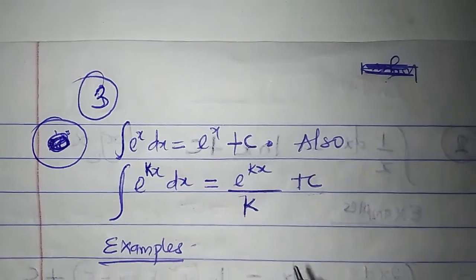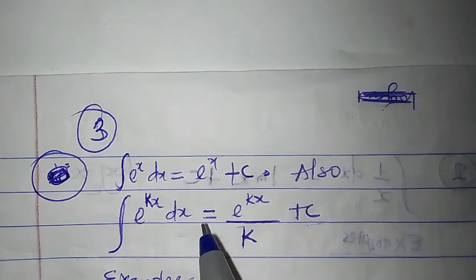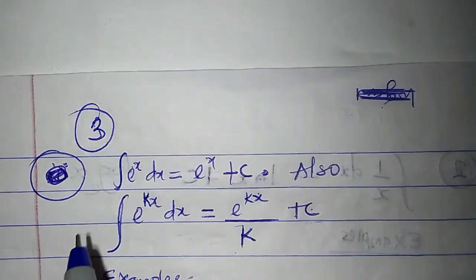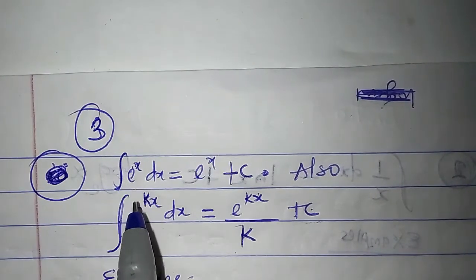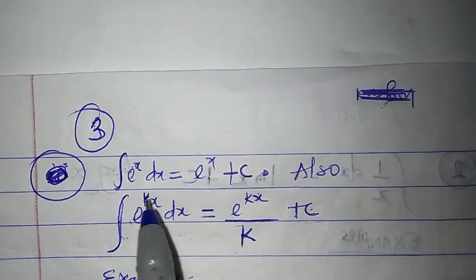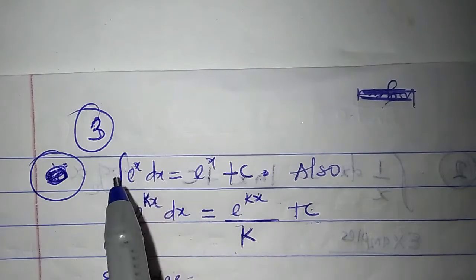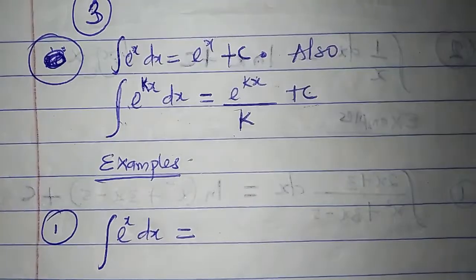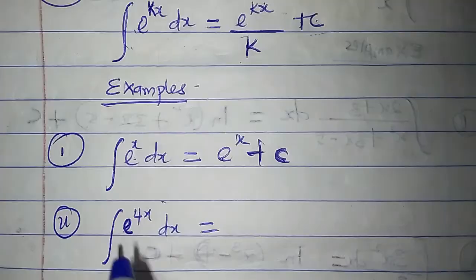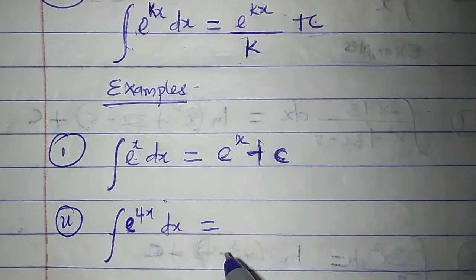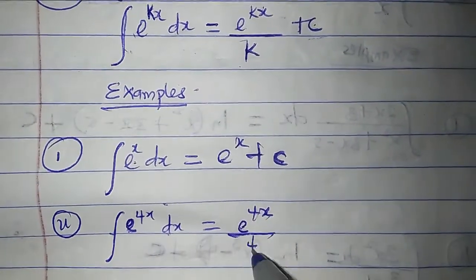The next standard integral: the integral of e to the power of x is e to the power of x plus c. Also, the integral of e to the power of kx dx is e to the power of kx all over k, plus c. The difference is the coefficient k; when k is 1 we write it simply as e to the power of x. For example, the integral of e to the power of x dx is e to the power of x plus c, and the integral of e to the power of 4x dx is e to the power of 4x all over 4, plus c.